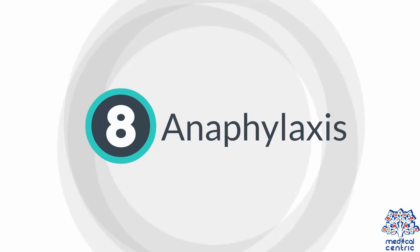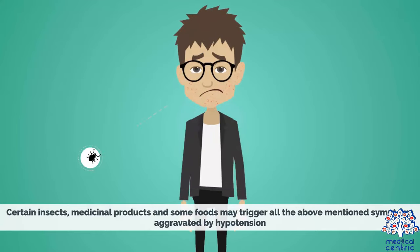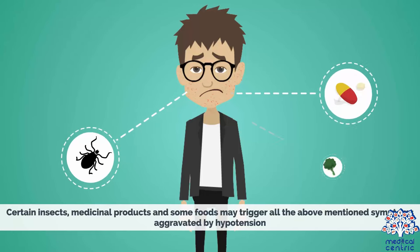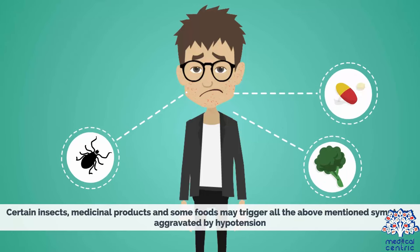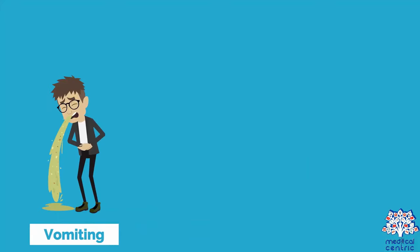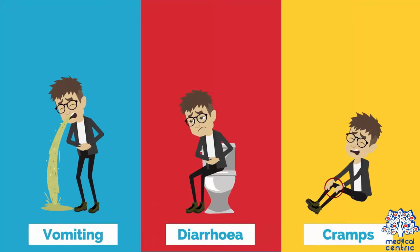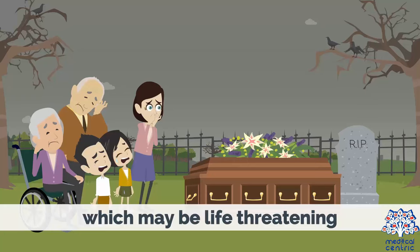Anaphylaxis: certain insects, medicinal products and some foods may trigger all the above mentioned symptoms, aggravated by hypotension, vomiting, diarrhea and cramps, which may be life-threatening.